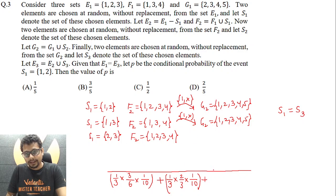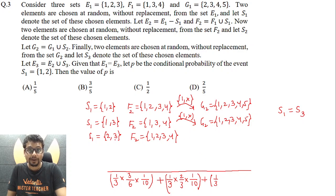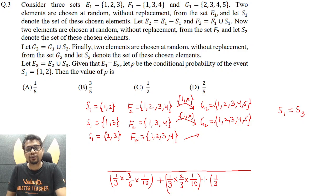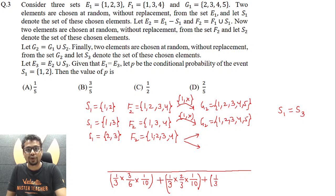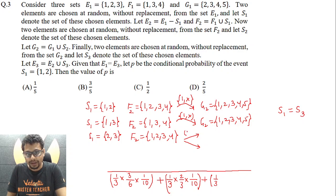Let's go for another possibility: S1 being {2,3}, probability 1/3, and F2 would be {1,2,3,4}. S3 is supposed to be {2,3}. Here, 2 and 3 are already part of G1 and hence would surely be part of G2. So any two elements from F2 can be selected as S2. However, we'll make two sub-cases: one where 1 gets selected in S2 — making G2 have 5 elements — and one where 1 does not get selected, giving G2 only 4 elements.